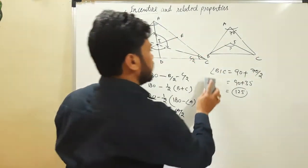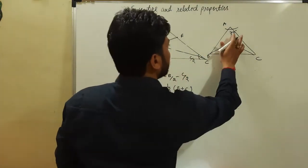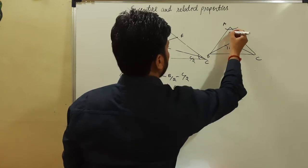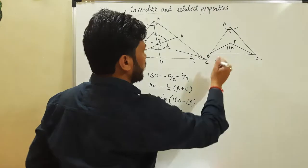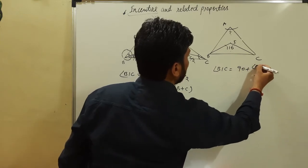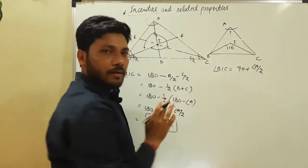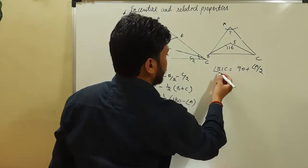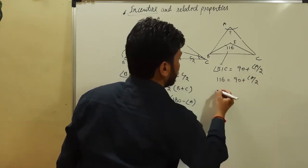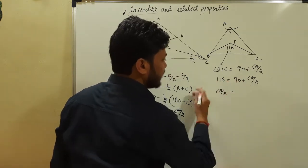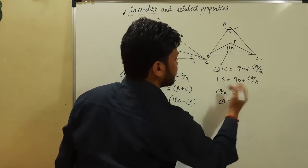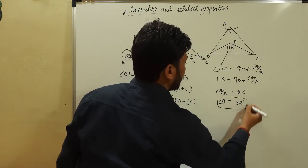This question can be given in a different way. For example, if angle BIC is given as 116 degrees and they ask what is the value of angle A, we put the values: 116 equals 90 plus half of angle A. So half of angle A equals 116 minus 90, which is 26. Therefore angle A equals 26 multiplied by 2, which is 52 degrees.